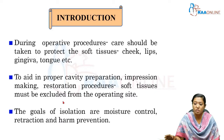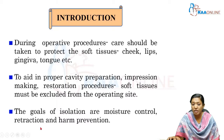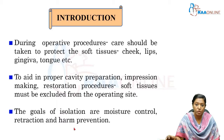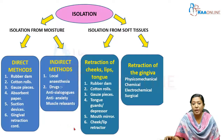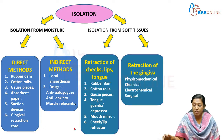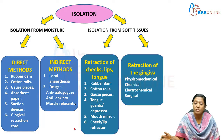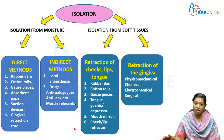The three goals of isolation are: first, moisture control; second, retraction of soft tissues; and third, prevention of damage or injury to the soft tissues. This is also a very important essay question — define isolation, classify isolation devices, and explain in detail about rubber dam.